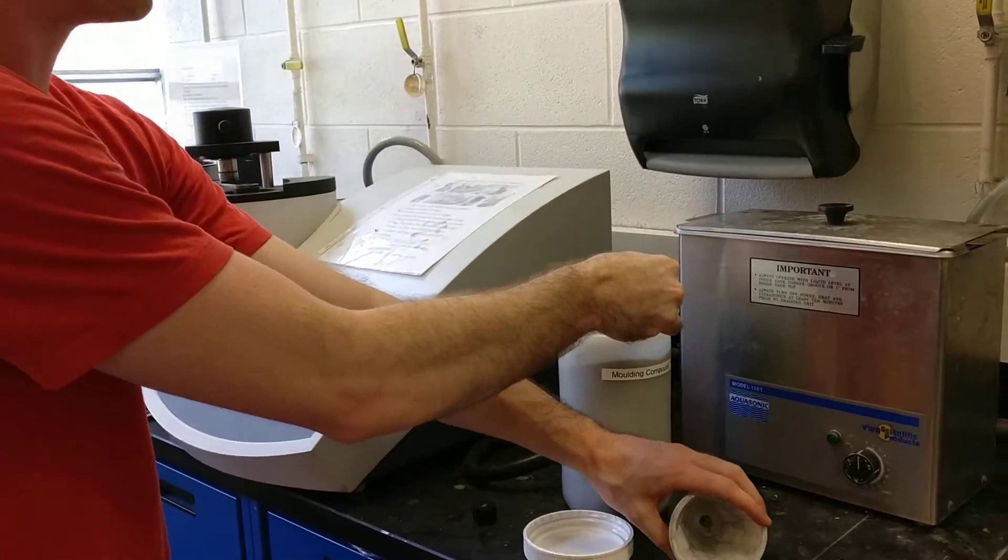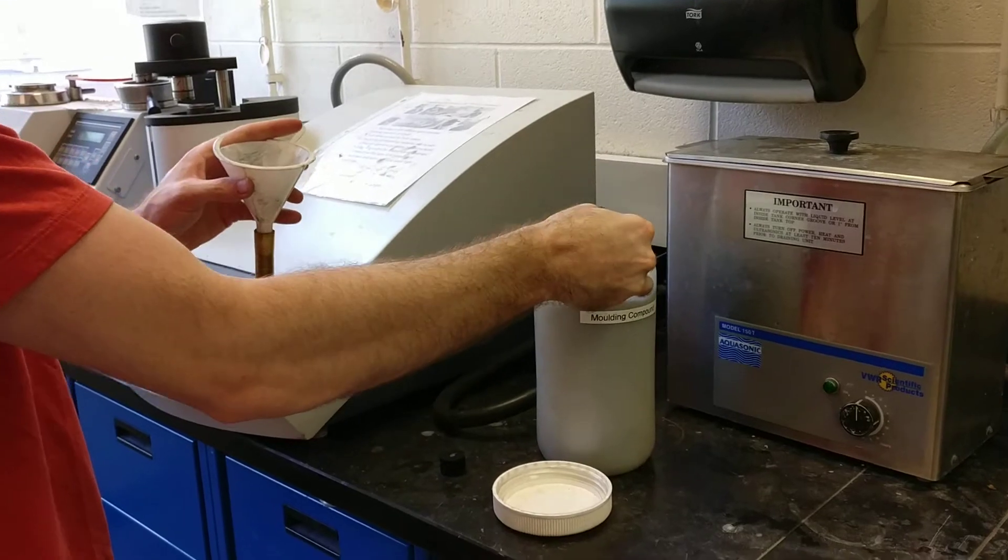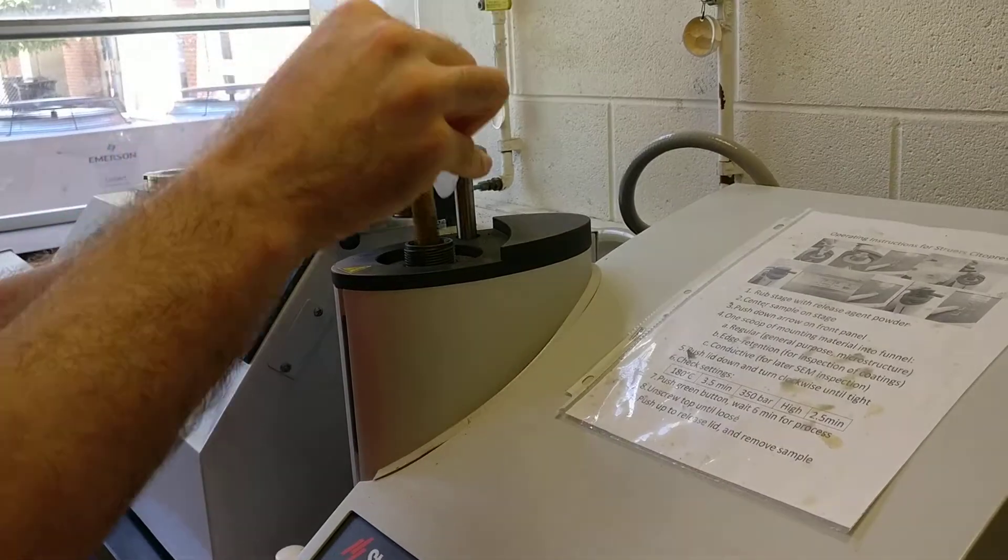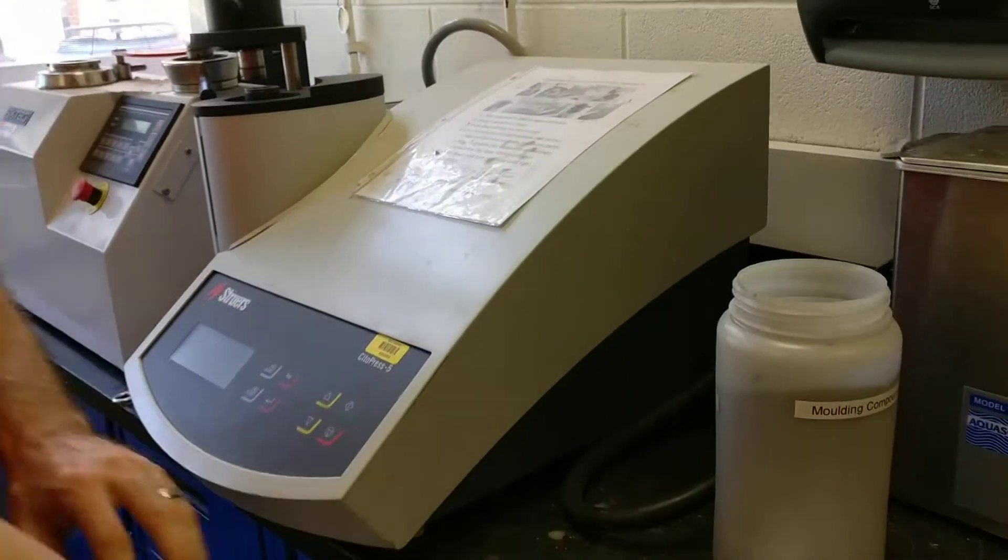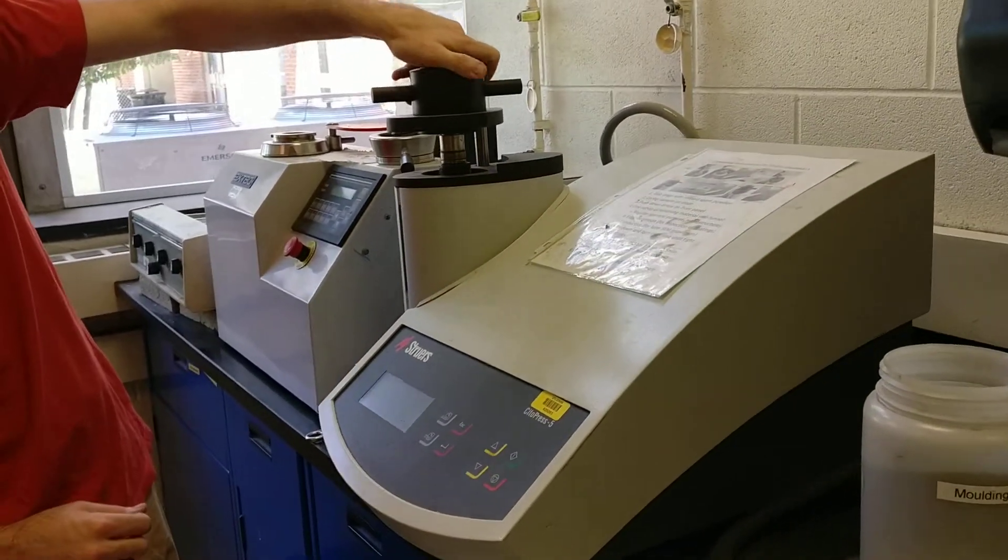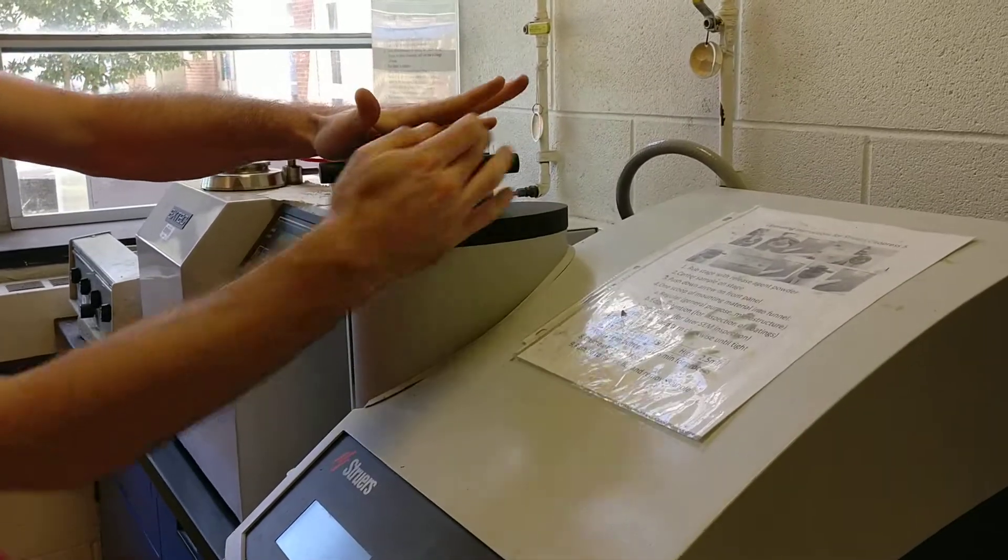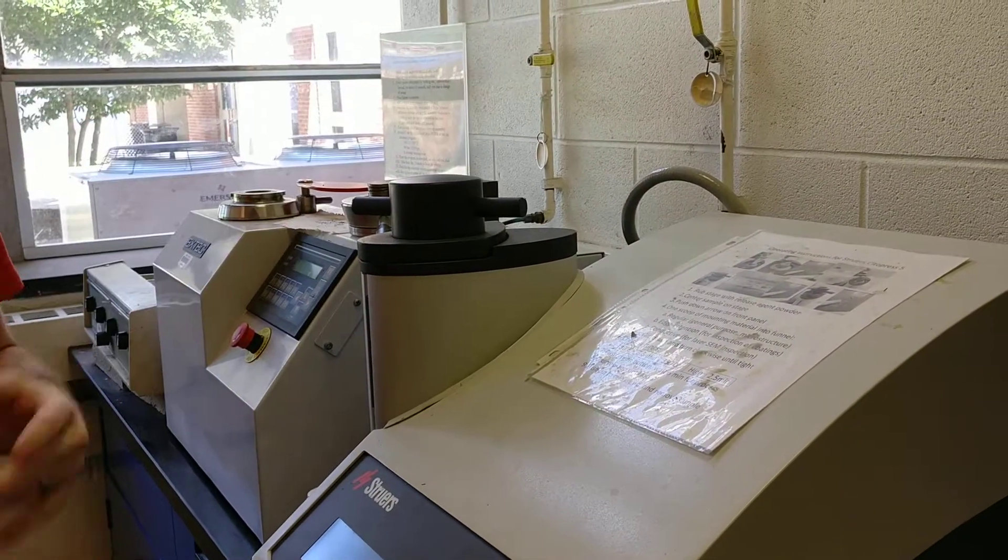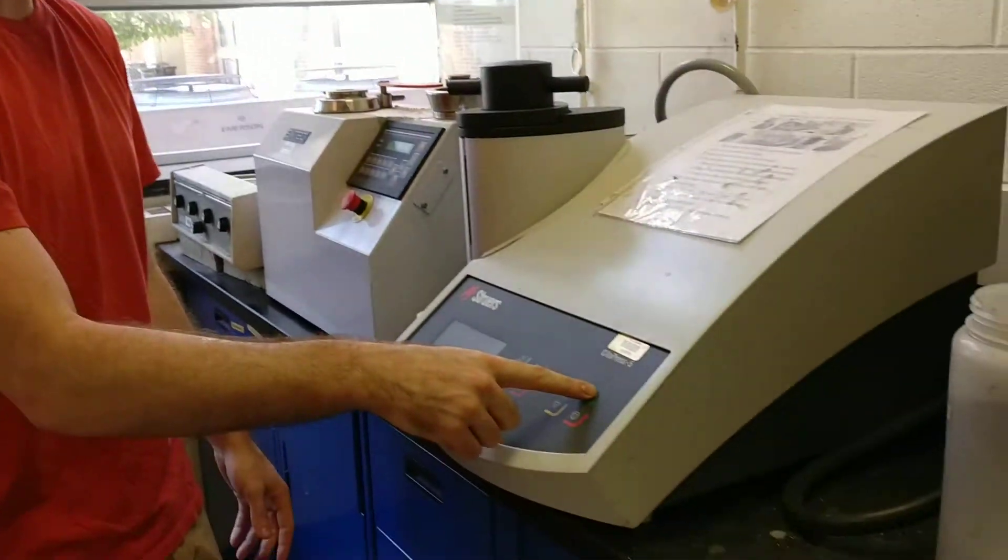You're going to put about one scoop in here, use the funnel to the top. Then you're going to put this in the tub and it just screws closed, so just hand tight. And then all you have to do is press the green button here.